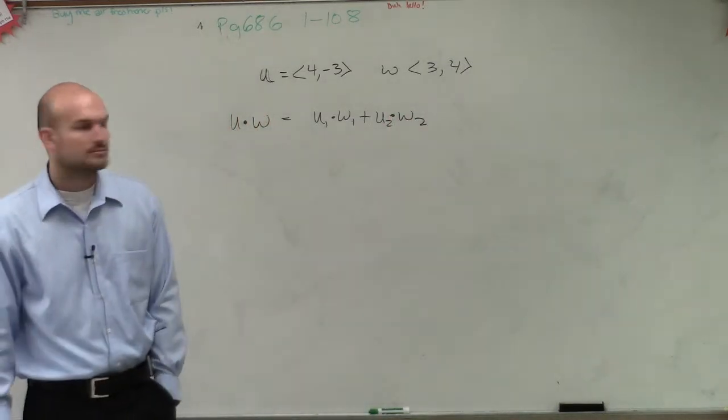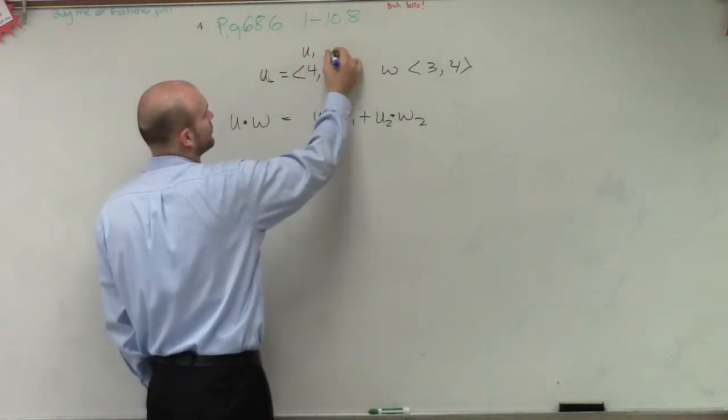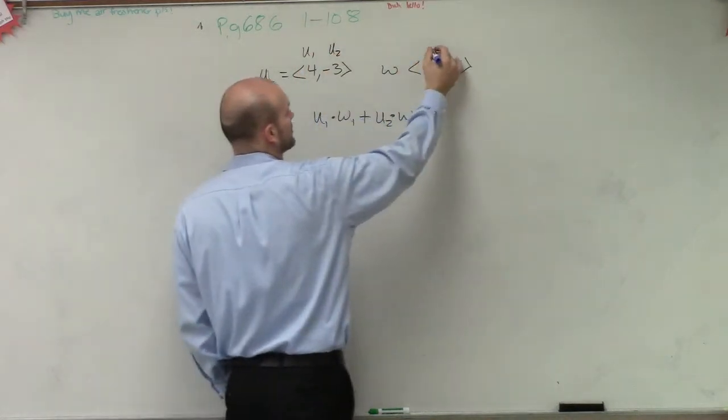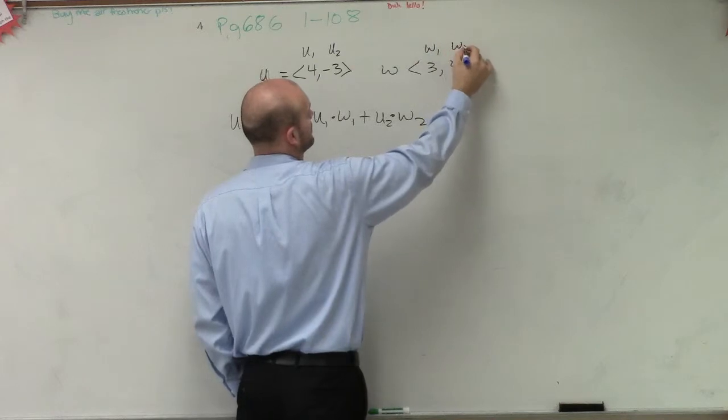So we need to say, if this is u, then this would be u1, u2. This would be w1, w2.